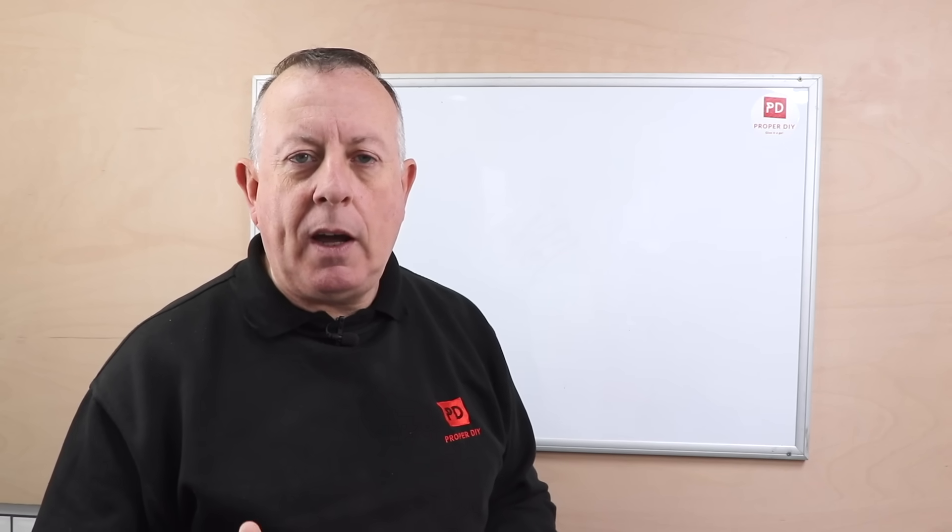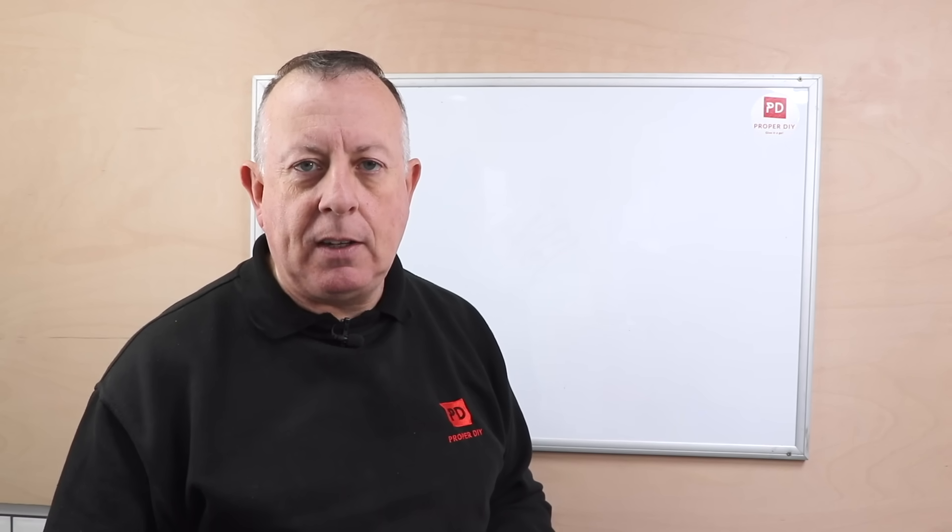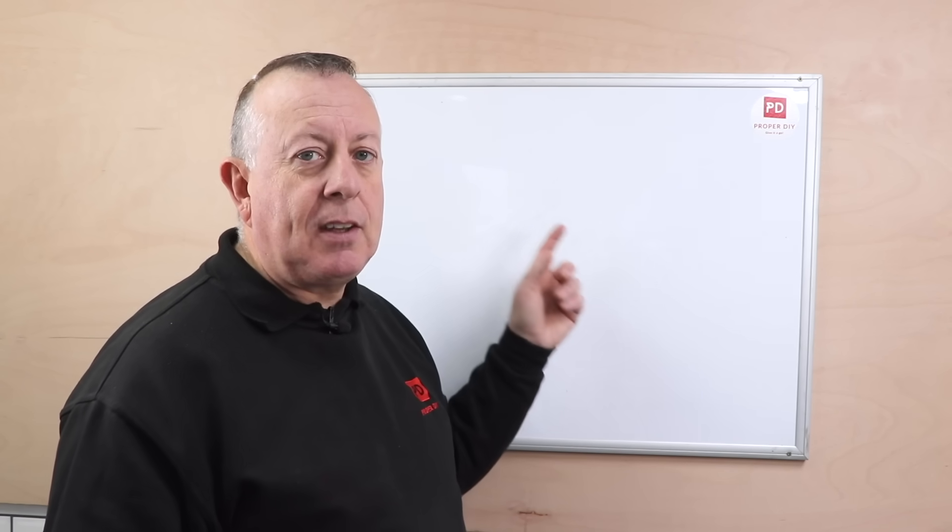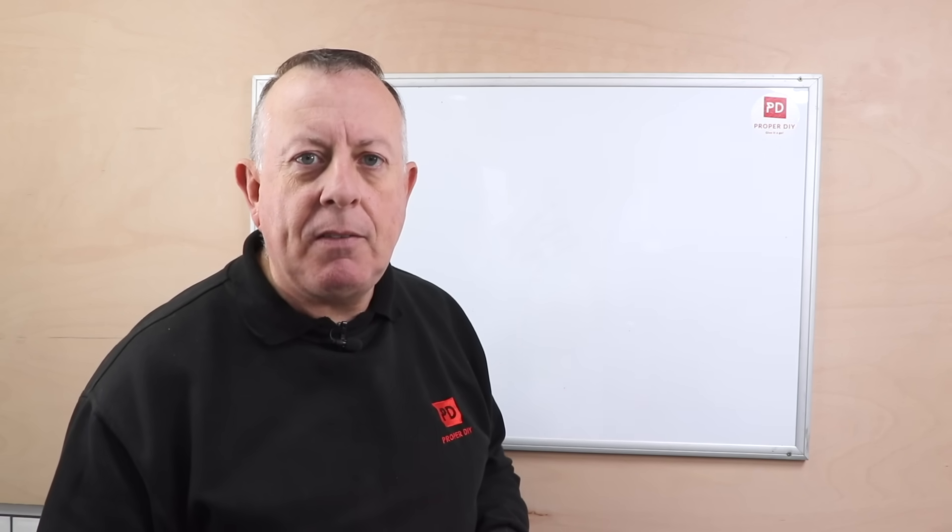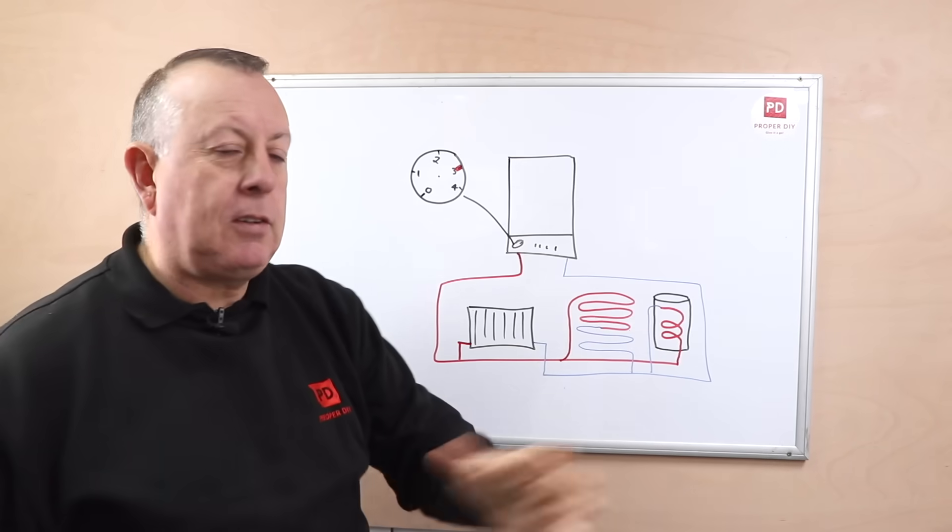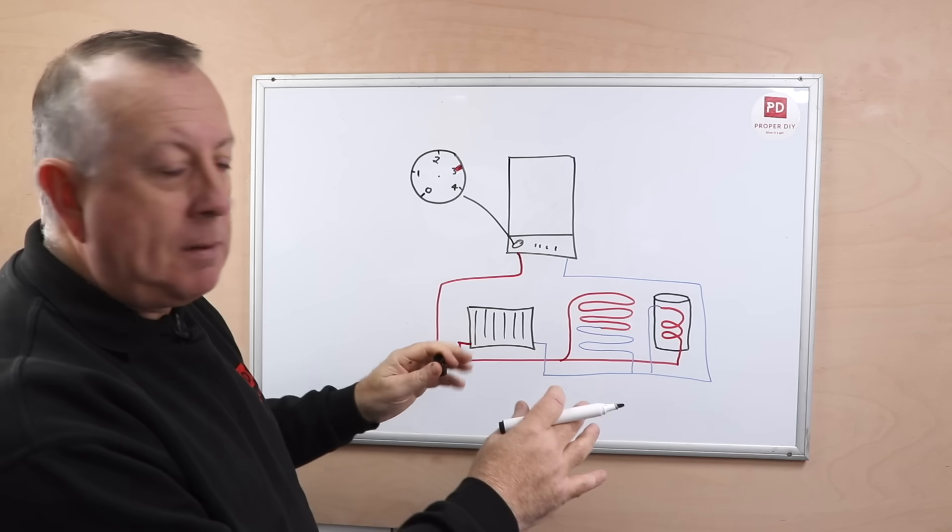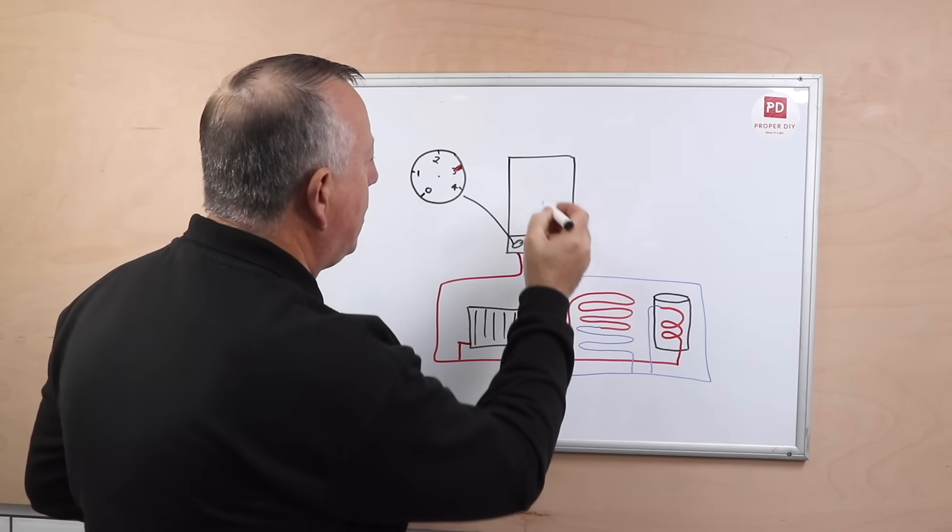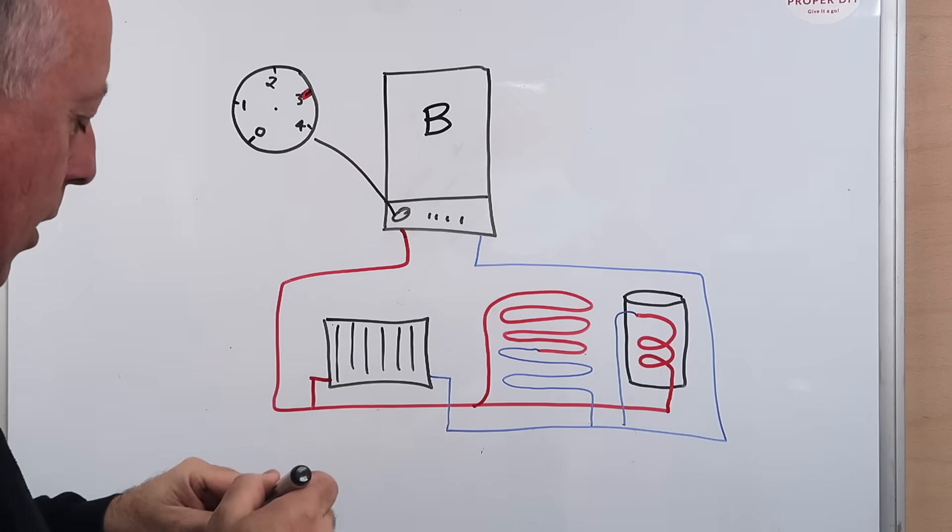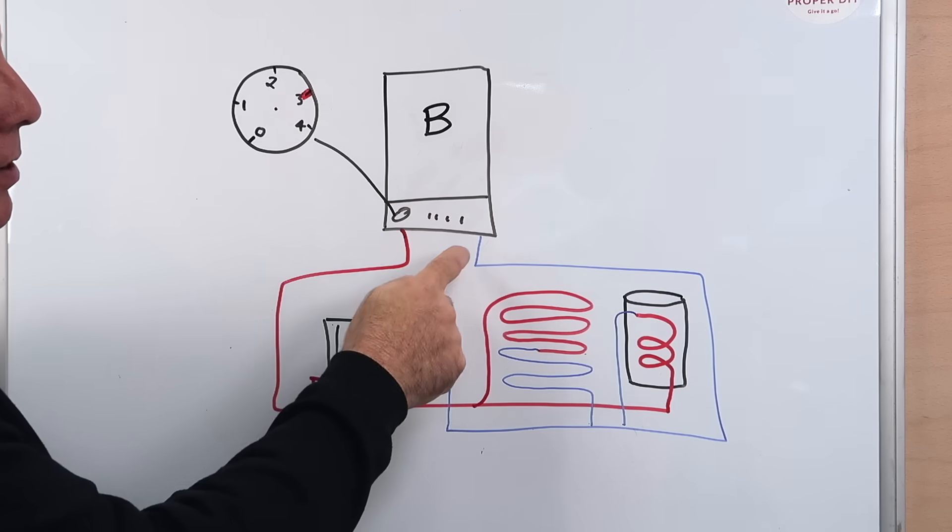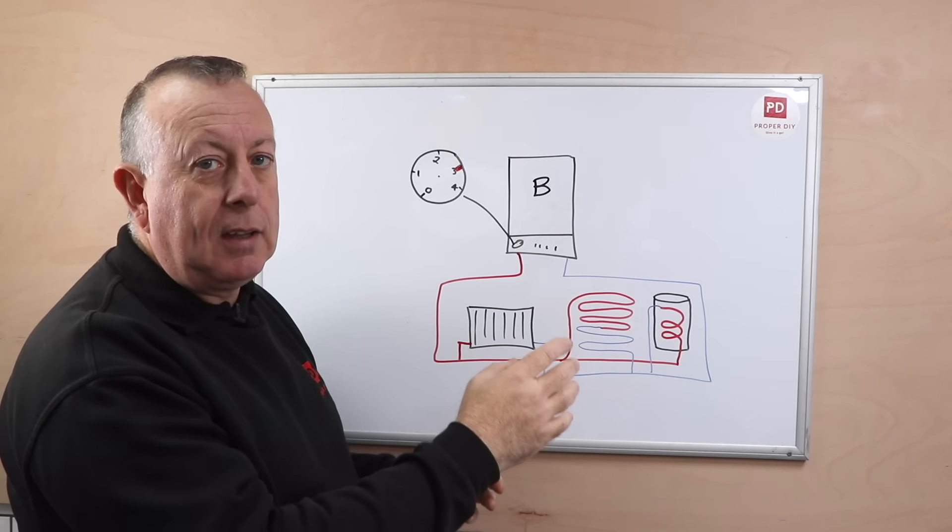Now to explain why we end up with a pressure loss in a system, first thing we need to do is explain how a central heating system works. So I think we need a bit of a sketch. Just to explain my sketch here, essentially what we've got is the heart of the system is the boiler with the big B on it, and that essentially just heats colder water into hotter water.